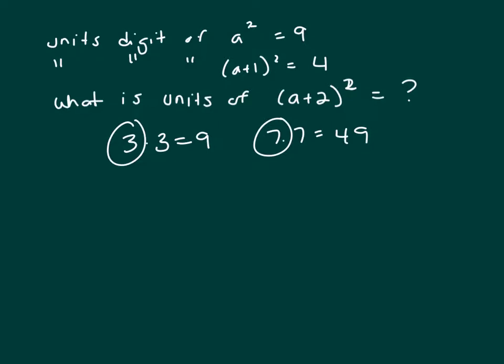Now, the units digit of (a+1)². Well, 3 plus 1 squared, that's 4². And 4² is 16, that ends in a 6.